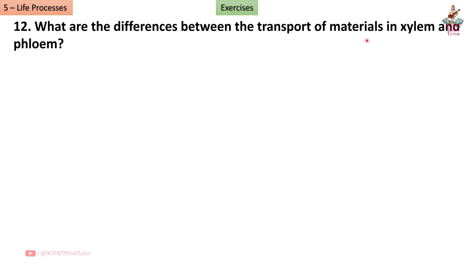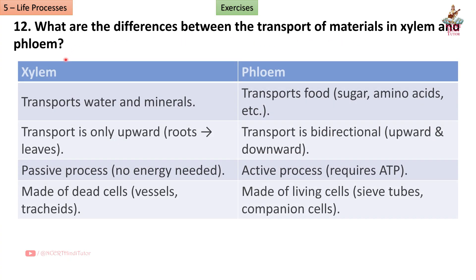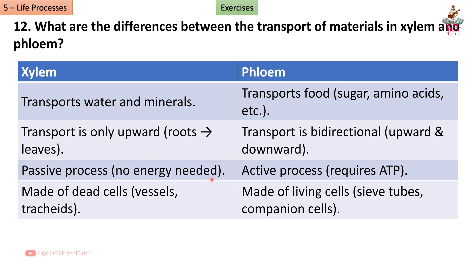Double circulation is necessary because it prevents mixing of oxygenated and deoxygenated blood and ensures efficient oxygen supply and high energy needed by warm-blooded animals. Question 12: What are the differences between transport of materials in xylem and phloem? Answer: Xylem transports water and minerals; phloem transports food (sugar, amino acids, etc.). Xylem transport is only upward (roots to leaves); phloem transport is bidirectional (upward and downward). Xylem is a passive process (no energy needed); phloem is an active process (requires ATP).